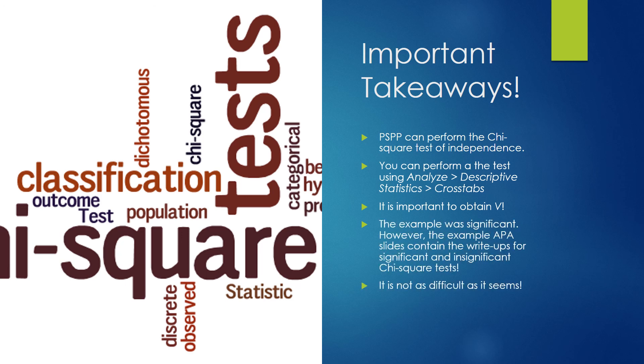The example we had was significant. It was very significant and very strong. However, the handout in the class will show you how to write up insignificant and significant chi-squared tests. It also contains a table of Cramer's V, which you should really review.